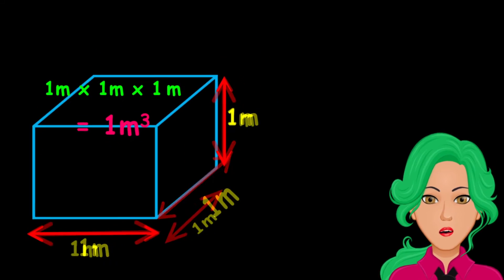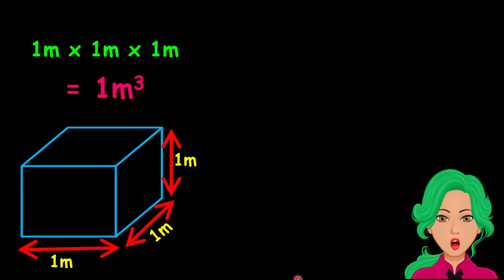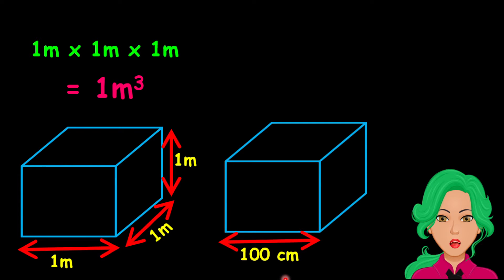Now, let us make a copy of this cube. Since it is the exact cube, all of the measurements are exactly the same. Now instead of measuring in meters, let us measure in centimeters. Remember, one meter is the same as 100 centimeters. Therefore, the length is 100 centimeters, the width is 100 centimeters, and the height is 100 centimeters.